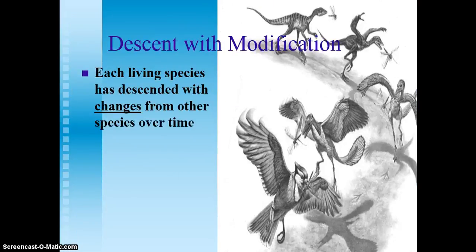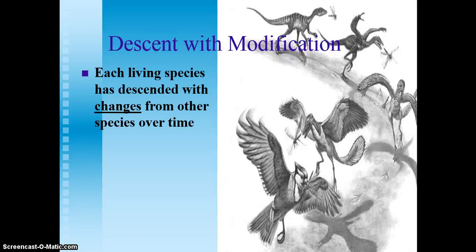Descent with modification is the idea that each living species has descended with changes from other species over time. Many of you have heard that dinosaurs and birds are related, and so over time, as these changes built up,